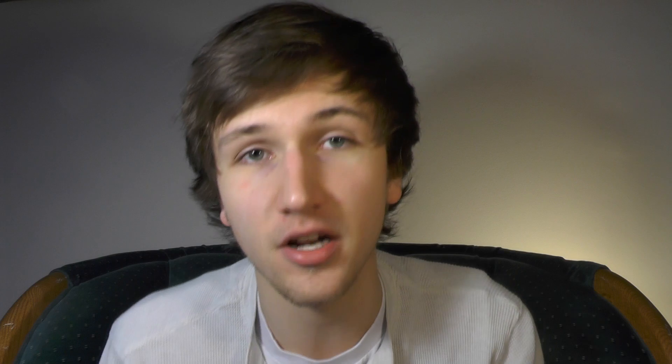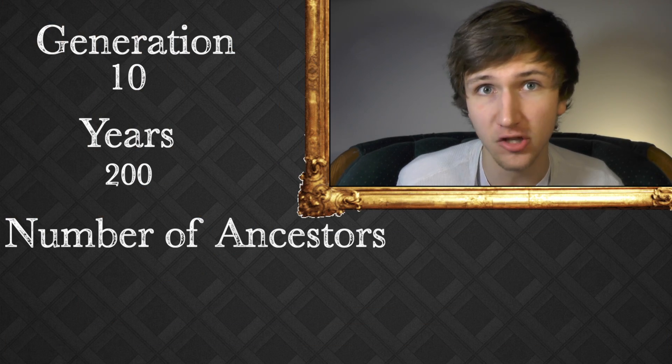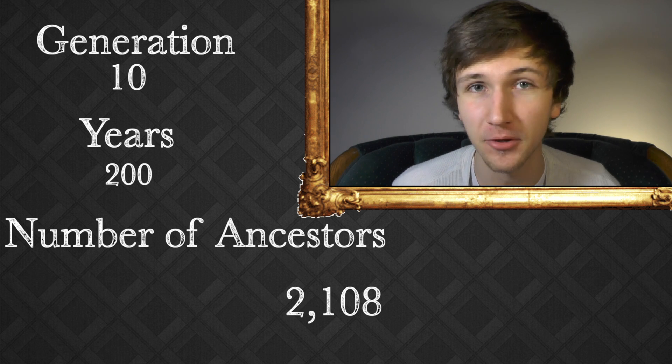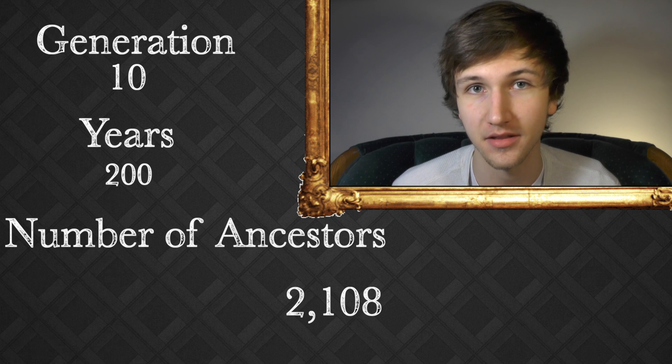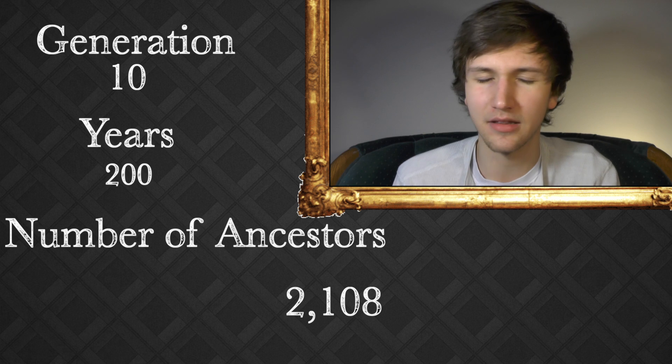You're going to soon find out that these numbers don't stay small at all. It should also be noted that the numbers I'll be using are in a perfect world scenario, meaning that there is no incest — but for now, the numbers are fun to learn about. As I said, five generations is 62 people. So what about 10 generations? That's about 200 years. That number jumps quite a bit, actually — 10 generations before you contains 2,108 people. That's from the 10th generation all the way to your parents, and all these people were necessary for you to exist today.